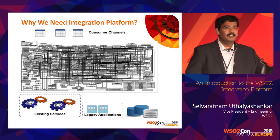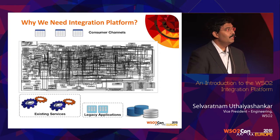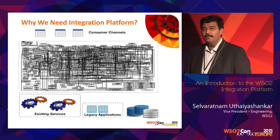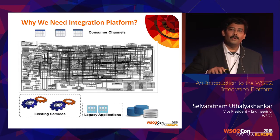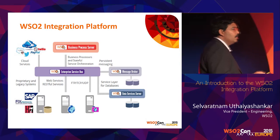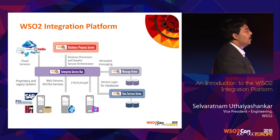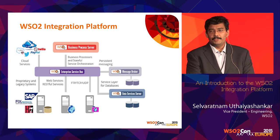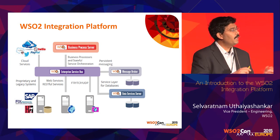So why do we need integration? This is a typical picture you would see in any organization showing how services or applications are connected to each other. Basically, it's very hard to modify, very hard to understand what's going on, and you won't know if you modify one application what other applications will be affected. To simplify this architecture, we use the integration platform. WSO2's integration platform mainly consists of four products, plus some additional products that help on the integration side.